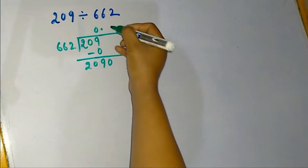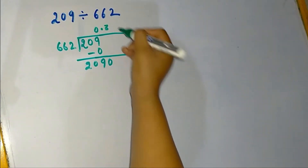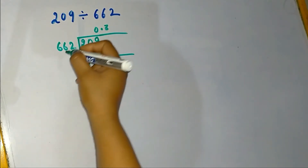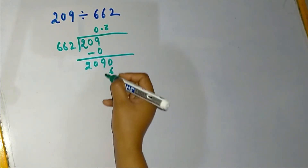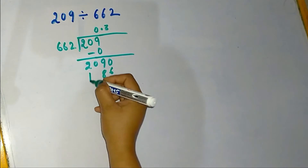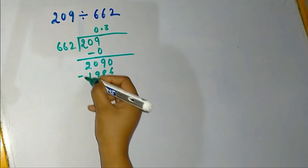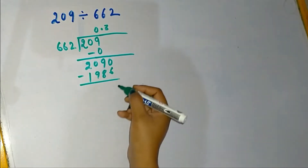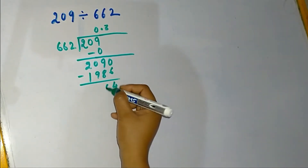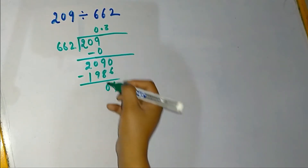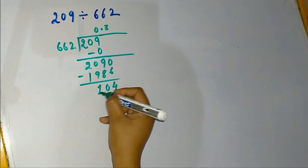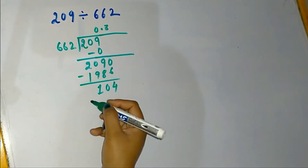So let's write down 3 here. 3 × 2 is 6; 3 × 6 is 18; 3 × 6 is 18, plus 1 carry is 19. Subtracting: 10 − 6 is 4, 8 − 8 is 0, 10 − 9 is 1, 1 − 1 is 0.